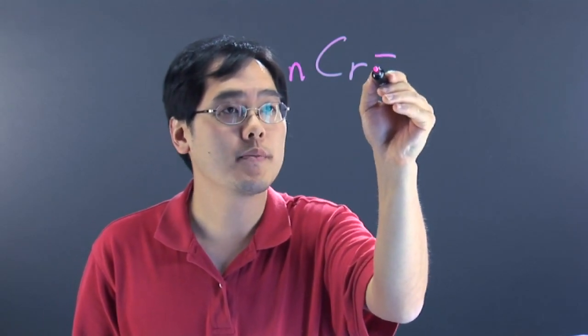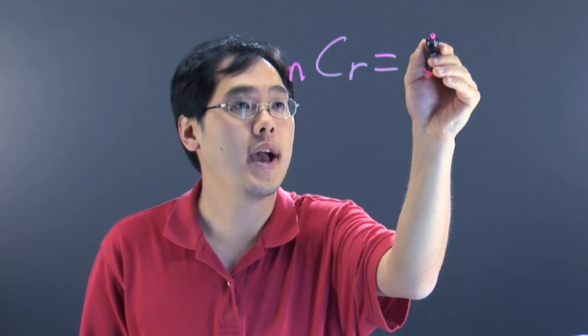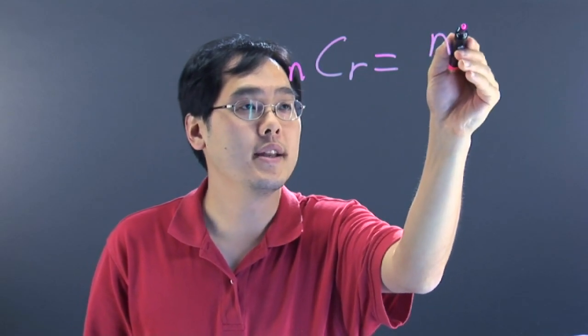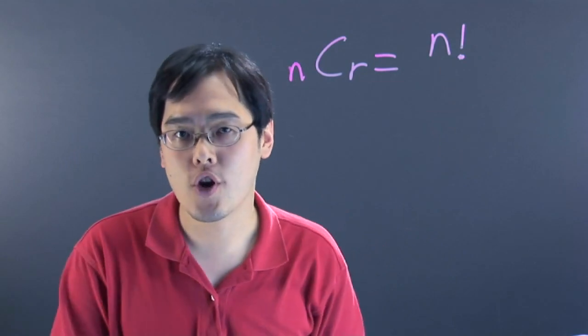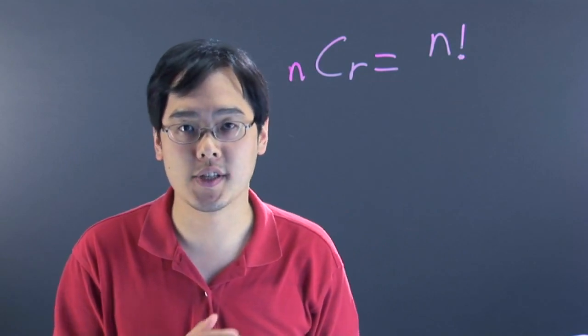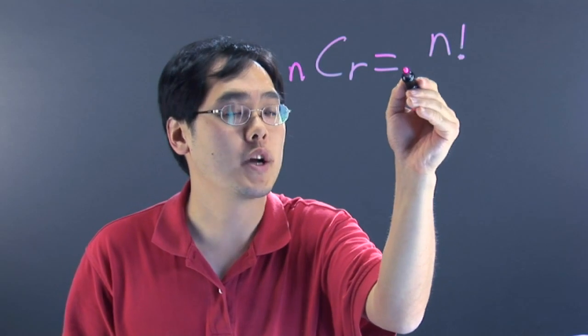So first and foremost, it's a fraction. You have the numerator, N, and you want to find N factorial. By now you should know what factorial is. It's just a sequence of numbers which we'll talk about in a little bit.